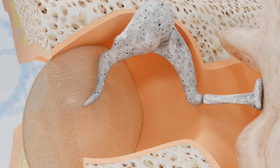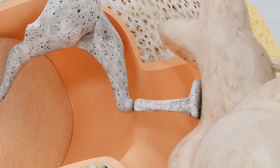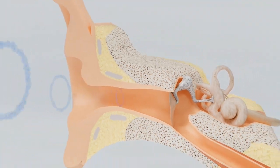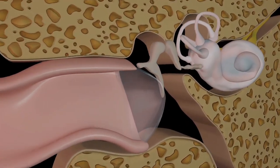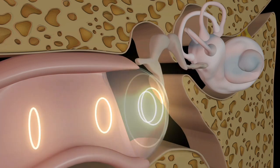Amplification. Eardrum, tympanic membrane. When sound waves reach the eardrum, they cause it to vibrate. Ossicles: malleus, incus, stapes. Vibrations from the eardrum are transmitted through these three small bones in the middle ear. They amplify the vibrations.